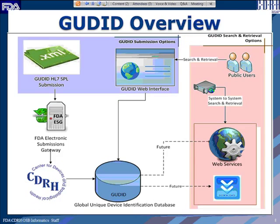This slide provides a pictorial overview of GoodID. On the left-hand side in the blue box, there are two submission options: the GoodID Web Interface and the GoodID HL7 SPL submission option, which is the main focus of this training module. The GoodID Web Interface allows labelers to submit device identification information via a manual entry process — a secure web interface where you log in and submit device information one at a time. The HL7 SPL submission option allows submission of information as an XML file.